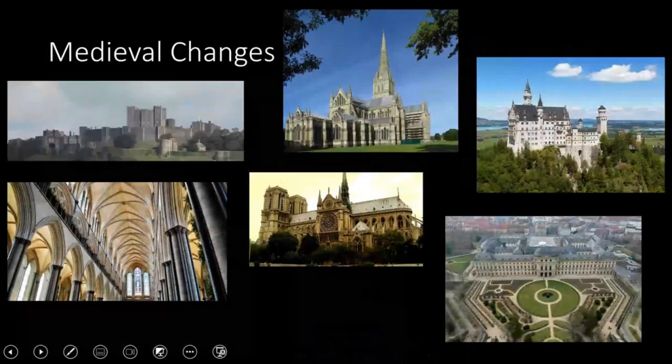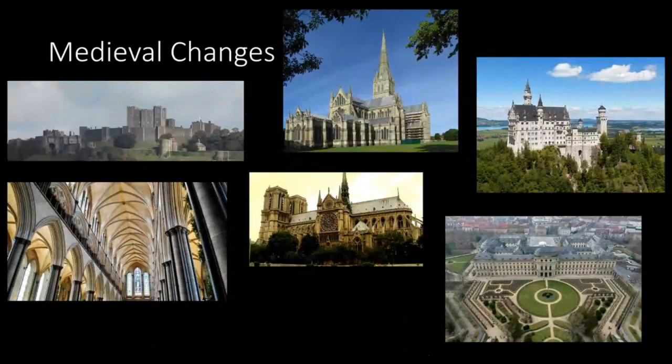Going into the medieval period, we looked at a number of different things. We looked at simple defensive castles and talked about the different defensive features they would have: crenellations, arrow slits, wall walks, walls, ramparts — all to keep things secure.